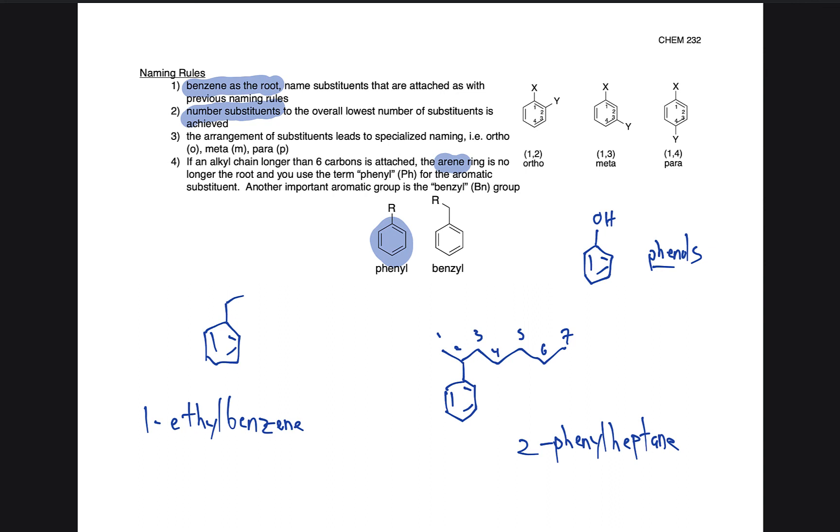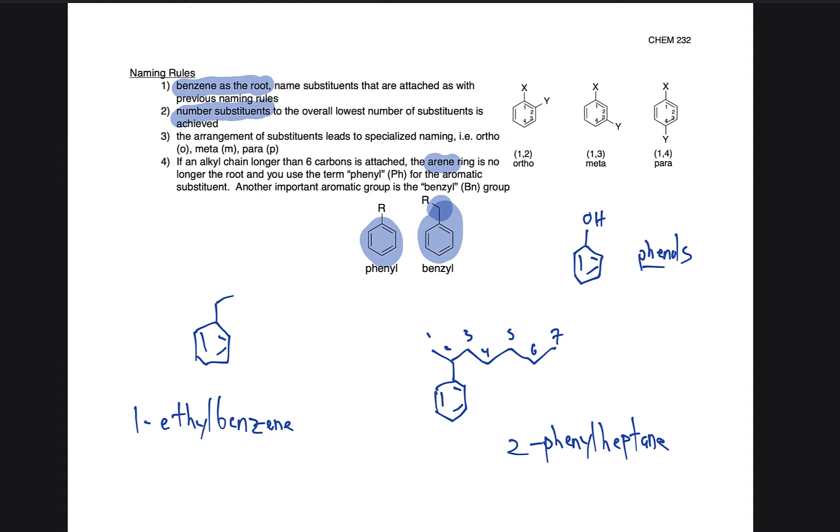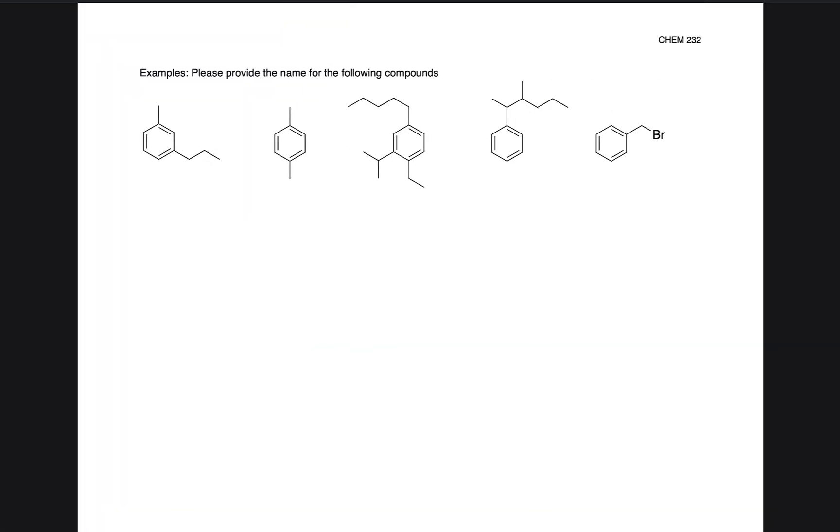One little caveat to that is if there's an extra CH2, like we see here, we would say that's a benzyl substituent. So with these rules in mind, we're going to go ahead and do some more naming problems in class, starting with all of these. We'll start off class by looking at some more of these examples and naming them.